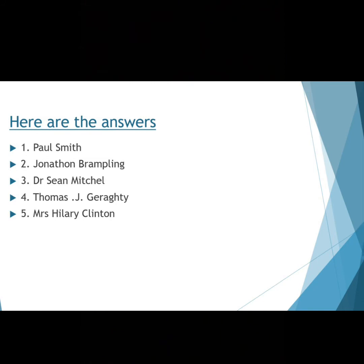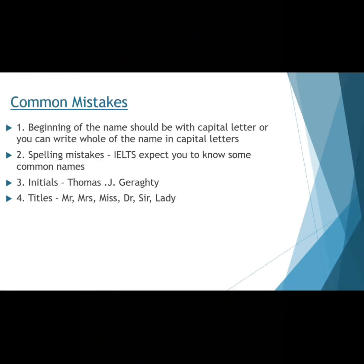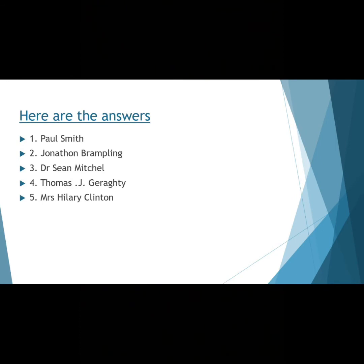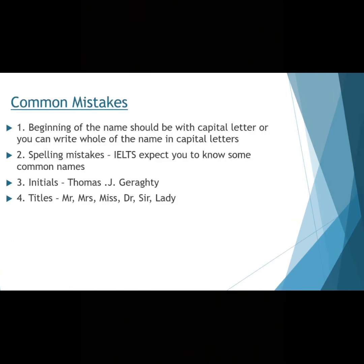Now I am going to let you know the common mistakes students make in the examination. First one is the beginning of the name — many of you have written small letters in the names. For example, the first one is Paul Smith. You might have written Smith with a small letter S — that is wrong. You have to keep capital letters for the first word Paul and the last word Smith; both S and P should be capital. To avoid this mistake, you can write the whole name in capital letters, which would eliminate your chances of getting the answer wrong.